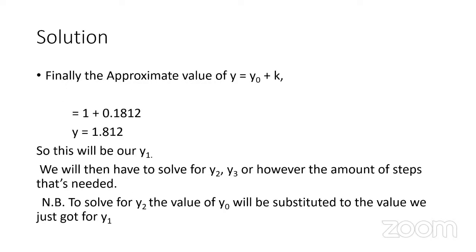Therefore, the summation of the intermediate slopes k = 0.1812. Putting it into the general equation: y₁ = y₀ + k = 1 + 0.1812 = 1.1812. To solve for y₂, y₃, and beyond, the same process repeats using the previous y value in place of y₀ throughout all the k formulas. It is a repetitive process — just like Euler's method — but maintaining much higher accuracy.